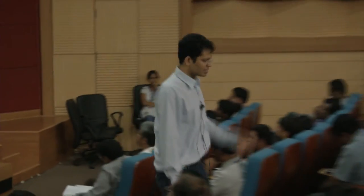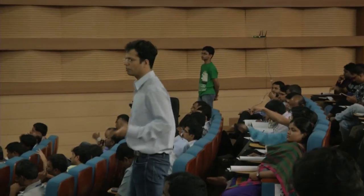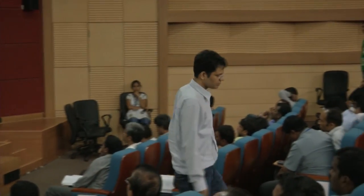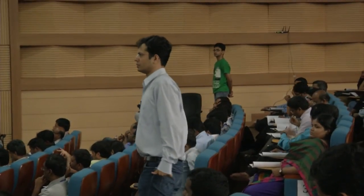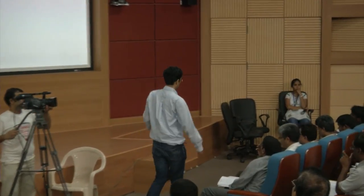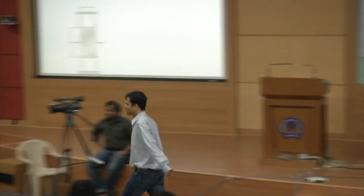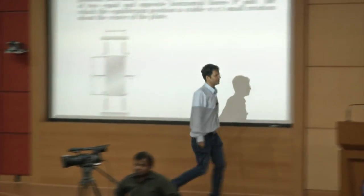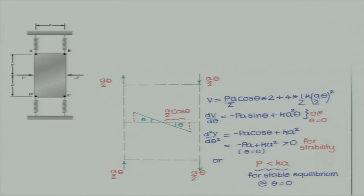Use rotation as the degree of freedom. Write down the potential energy and check the second derivative for stability. When the plate is perturbed by a small rotation theta about the center, two springs get compressed and two get stretched. Since each corner is at distance A/2 from the center, the stretch or compression at each spring is (A/2)·theta.